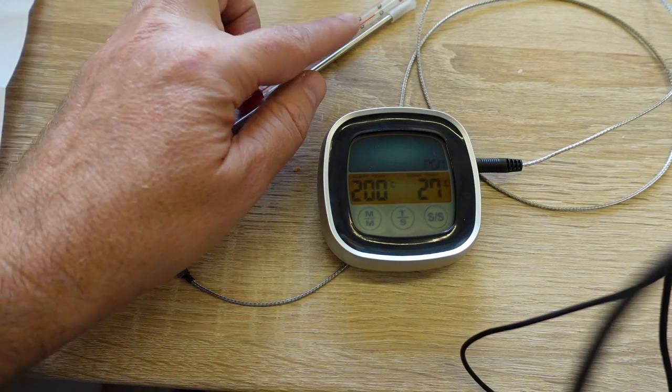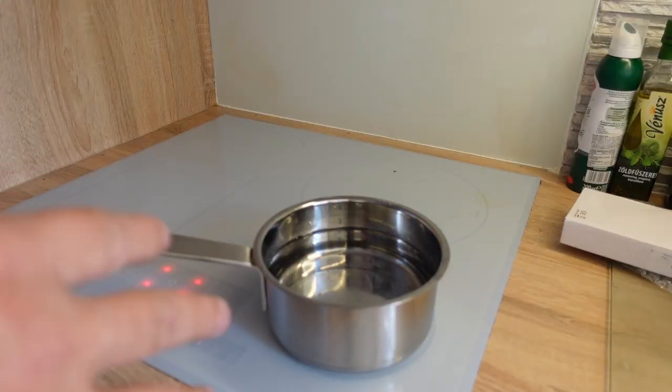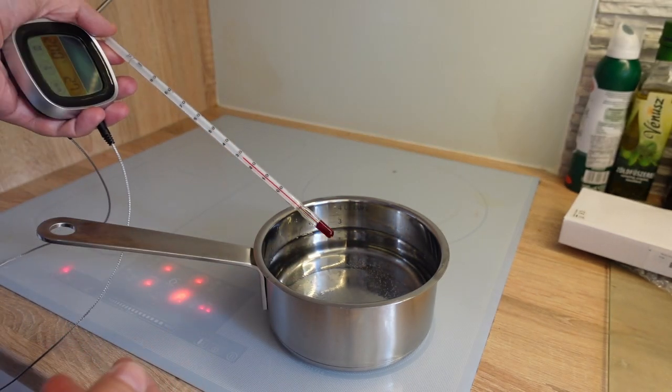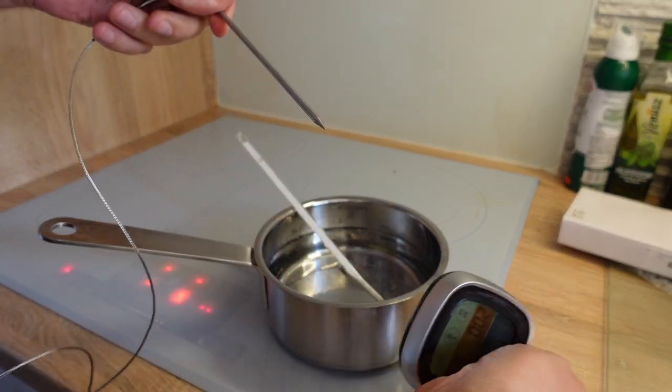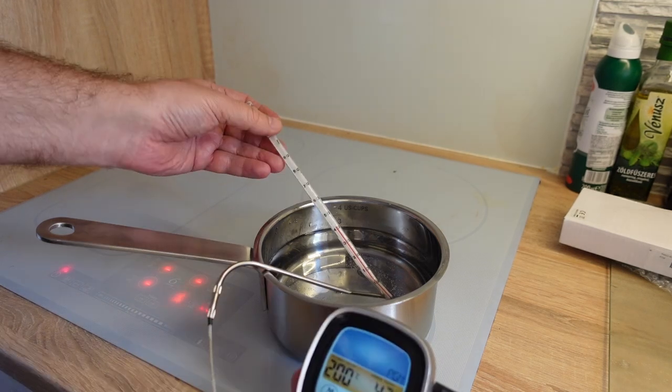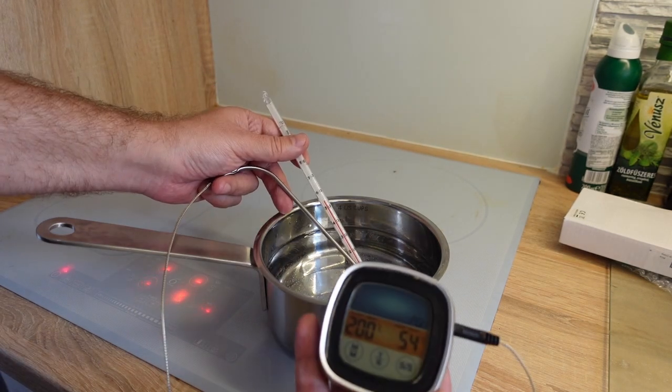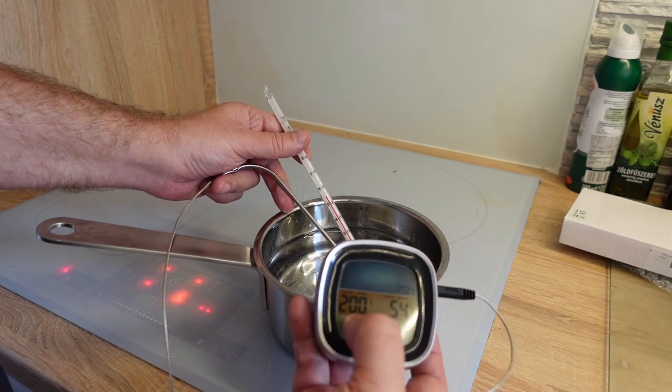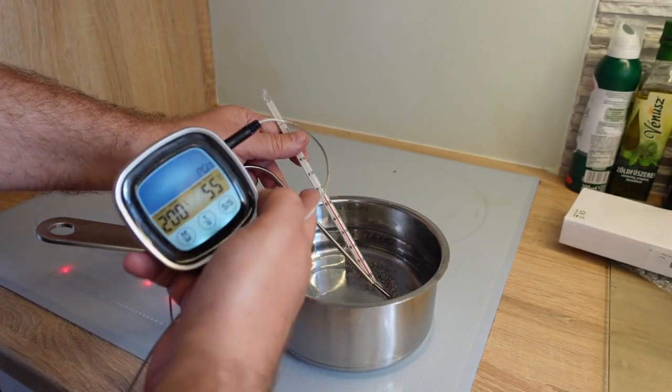Well, the boiling water should be always 100 degrees Celsius at atmospheric pressure. Let's follow the heating temperature. 42, 42, 42. Well, they still show the equal temperature so it is 54 here and 54 here, 55, 55. So the temperature is accurate on both thermometers.